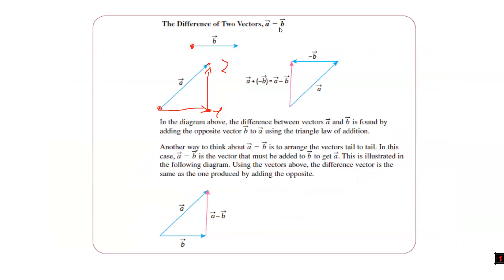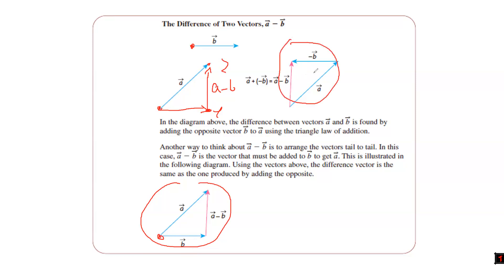These are two different ways to visualize subtraction. In one, you subtract vectors directly using tail-to-tail. In the other, you add a negative vector to a positive vector. You know that plus times minus is always minus. One assumption: if the vectors being subtracted form an acute angle, the one you're adding forms an obtuse angle — but this creates the same result.